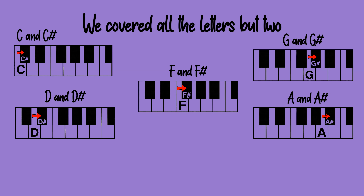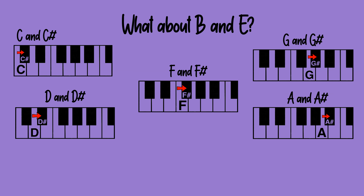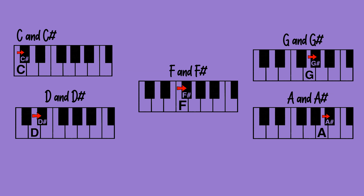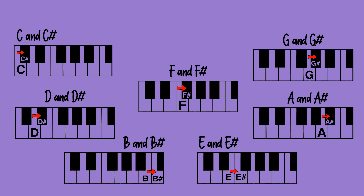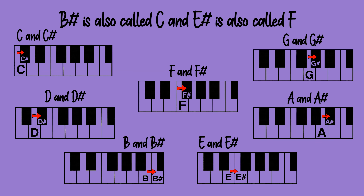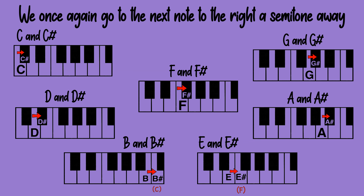We covered all the letters but two. What about B and E? This is B and B sharp, and this is E and E sharp. We once again go to the next note to the right a semitone away.